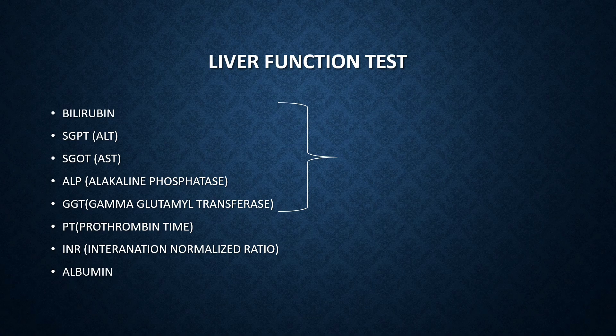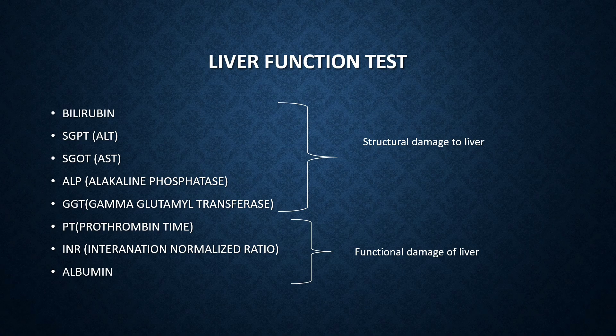Among these, bilirubin, SGPT, SGOT, alkaline phosphatase, and GGT are increased whenever there is structural damage to the liver — that is, whenever there is hepatocyte damage. PT/INR is increased and albumin becomes decreased when there is a functional damage to the liver. These are the investigations done during the liver function test.